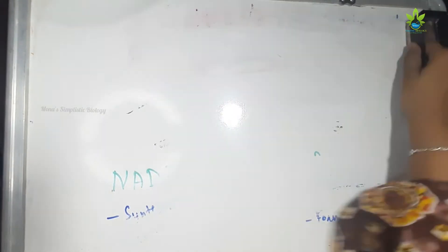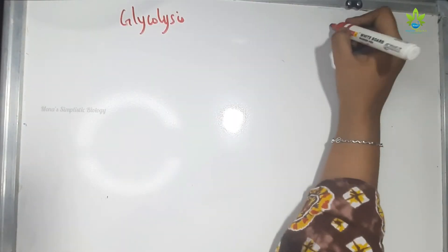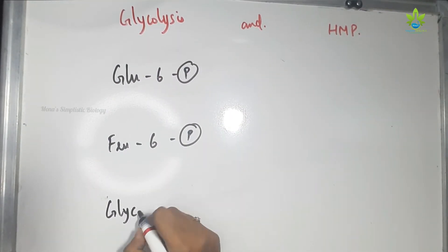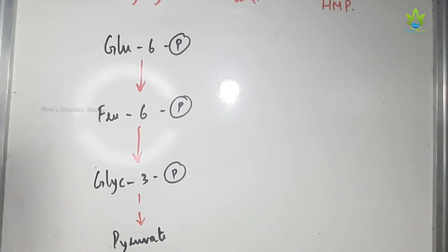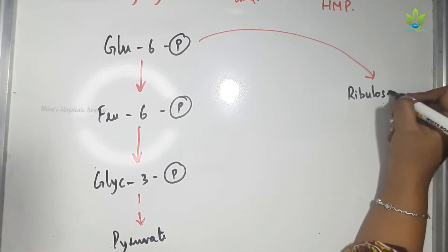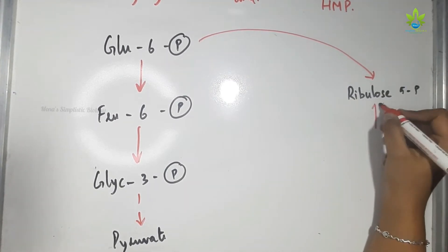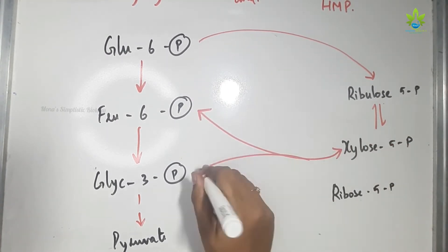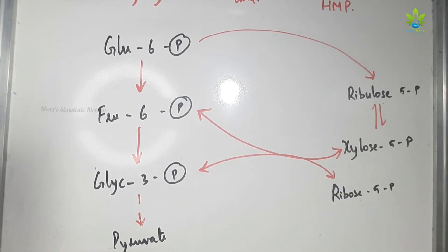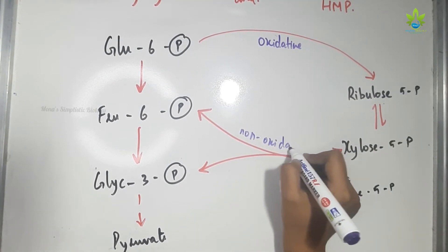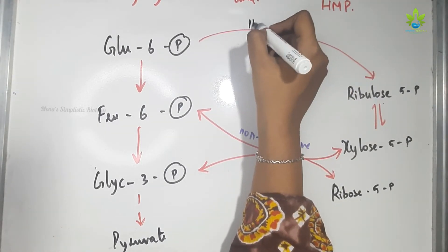This pathway is an alternative route of glycolysis. Glycolysis starts with glucose-6-phosphate, then fructose-6-phosphate, then glyceraldehyde-3-phosphate, which yields pyruvate in the end. In the HMP shunt, glucose-6-phosphate is converted to ribose-5-phosphate. There are intermediary products like xylulose-5-phosphate and ribose-5-phosphate. Xylulose-5-phosphate gets back into glycolysis, making this the alternative route of glycolysis.